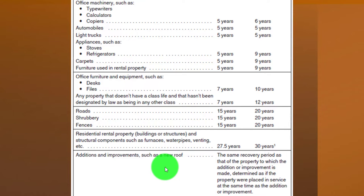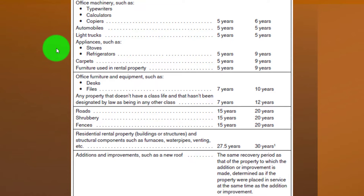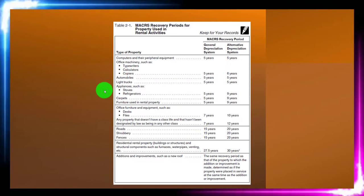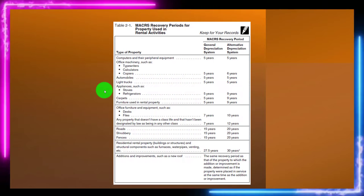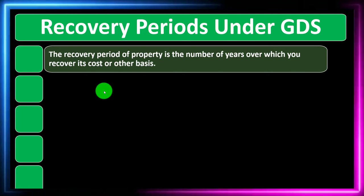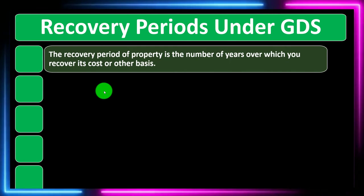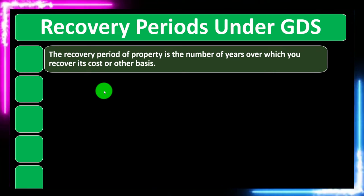Residential rental property has a 27.5-year recovery period — a pretty long time frame. If you have to capitalize it, you're getting the benefit of the expensing over a long threshold. That's why, from a tax planning standpoint, if you can expense it some other way or categorize something as carpeting rather than residential rental property, that would typically be beneficial — you'd have a shorter time frame and get the benefit sooner.